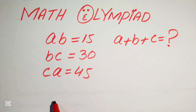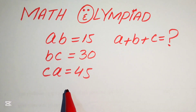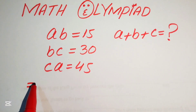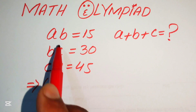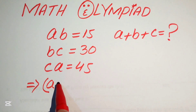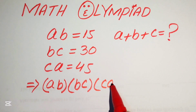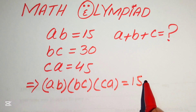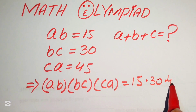The very first step is to multiply all three equations together — left hand sides with left hand sides and right hand sides with right hand sides. So we get: ab multiplied by bc multiplied by ca, equals 15 multiplied by 30 multiplied by 45.